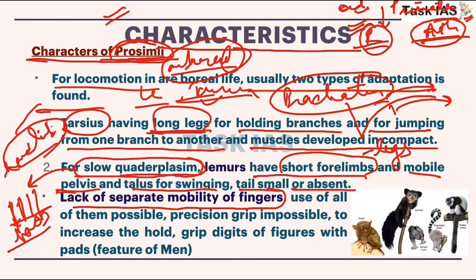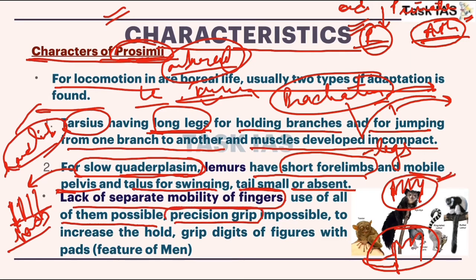The pelvis is mobile. There is lack of separate mobility of fingers — the size and shape of fingers as well as toes are almost comparable. In great apes we observe an opposable thumb, but those features are not present in prosimians, and due to this they lack precision grip. Precision grip is when you hold a pencil — your thumb is on one side and fingers on the other side.